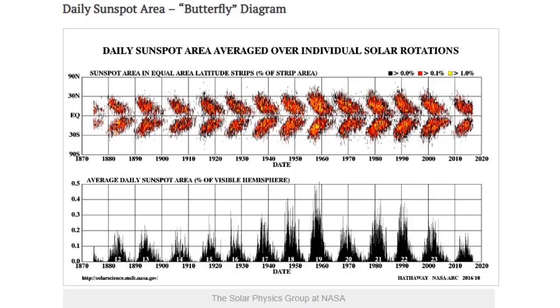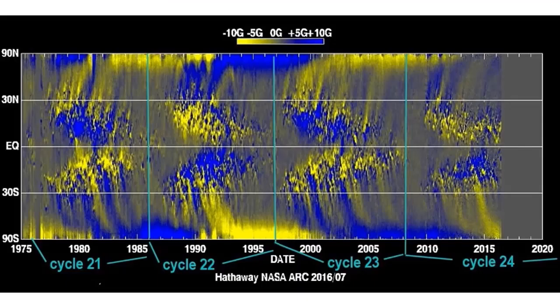On to the daily sunspot area butterfly diagram. This is how the sunspots form around the equator into the solar minimum and then spread toward 30 degrees north or 30 degrees south as we get into solar maximum. They've been following this since at least the 1870s. Then we can bring it into the modern era where they have spectacular analysis of the same butterfly diagram broken down by the solar cycles.